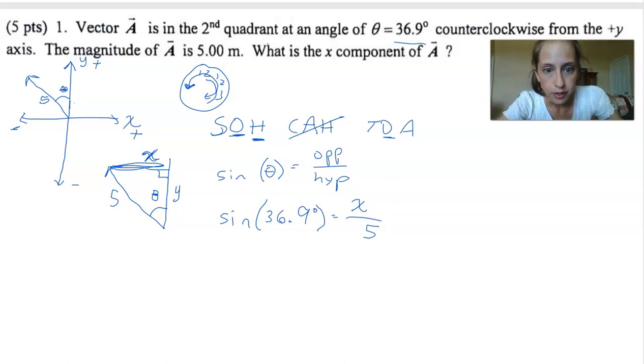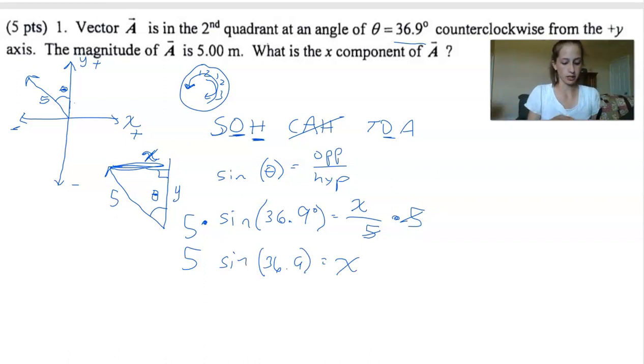I'm going way too fast. So we're going to get x by itself. Right now we're dividing by 5. So to undo that, we multiply by 5. That's how you undo division. So multiply both sides by 5. Those 5s cancel out. So now we know 5 times the sine of 36.9 equals x. So the sine of 36.9 times 5 is 3.02. We'll just call that 3.